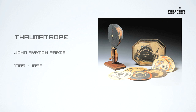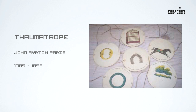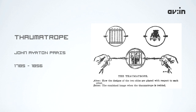Around the same time, the Thaumatrope was invented by John Ayrton Paris. This was a toy made with two images, one on either side of a disc held by two pieces of string. It created an optical illusion: as the string stretched and twisted, spinning the disc quickly, the illusion made it appear that the two images existed in the same place.